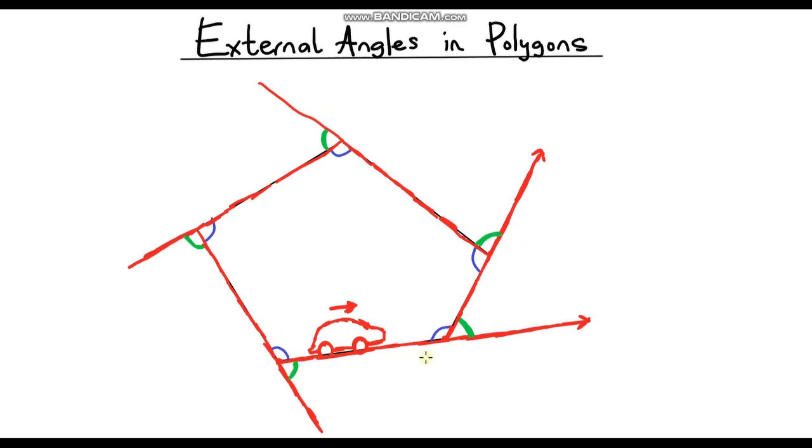So these are what external angles are. If you're ever a bit unsure, just think of this racetrack analogy and just do one at a time. Now what do you notice about the relationship between external angles and internal angles?